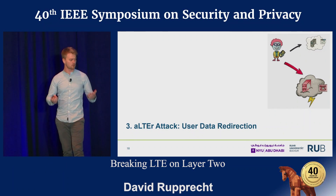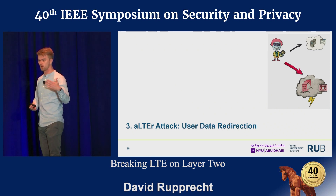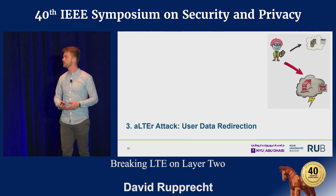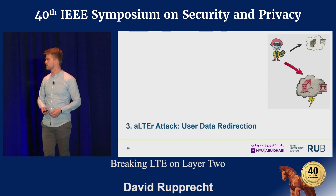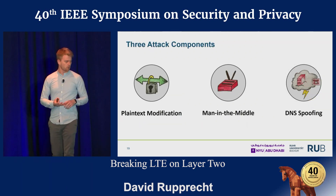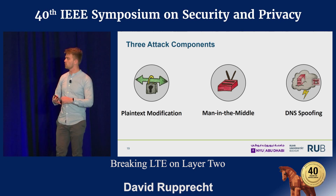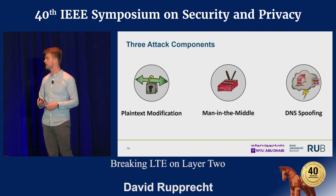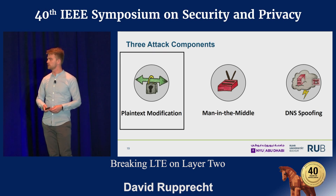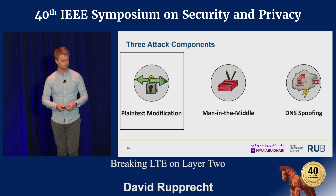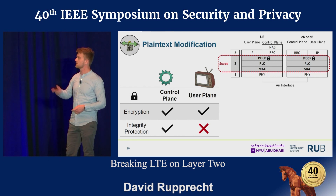Now I want to talk about the alter attack. Both previous attacks were passive; this is an active attack on layer two, which allows us to redirect a victim to a malicious website. The attack has three components. First, we can modify plaintext via a man-in-the-middle. One example of this is DNS spoofing. There is no integrity protection on the user plane — this happens at the PDCP layer — but the traffic is encrypted, so we need to understand how the traffic is actually encrypted in LTE for the user plane.